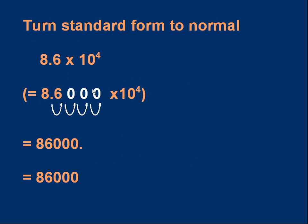Now, what about the other way around? If I've got a number in standard form, how do I turn it to normal decimal form? Here's an easy example: 8.6 times 10 to the 4. Multiplying by 10 to the 4 means moving the decimal point four times to the right. Adding trailing zeros after the 6 and moving the decimal point four times gives us 86000. We wouldn't normally write the decimal point at the end, so the answer is 86000.